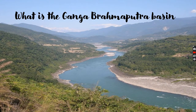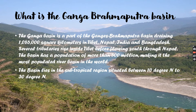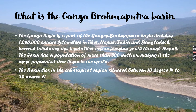So basically, what is the Ganga-Brahmaputra Basin? The Ganga-Brahmaputra Basin is a part of the Gangetic-Brahmaputra basin draining 1,086,000 square kilometers in Tibet, Nepal, India and Bangladesh. Several tributaries rise inside Tibet before flowing south through Nepal. The basin has a population of more than 500 million, making it the most populated river basin in the world. The basin lies in the subtropical region, situated between 10 degrees north to 30 degrees north.